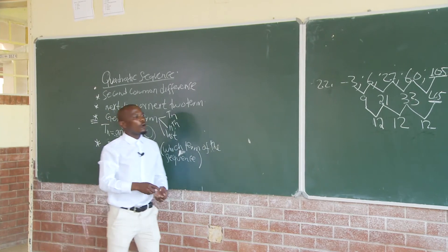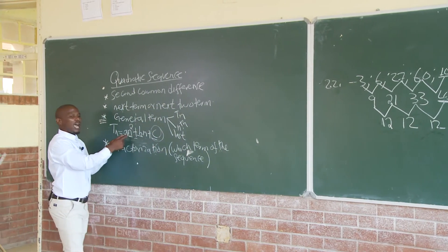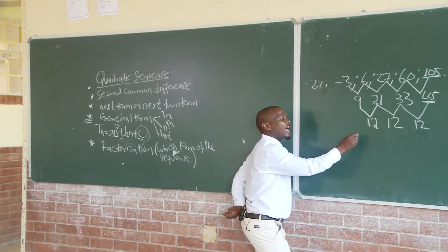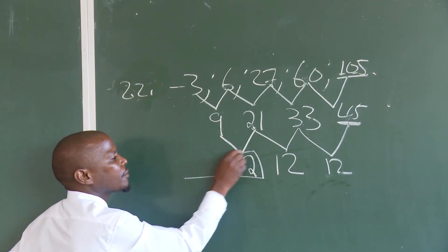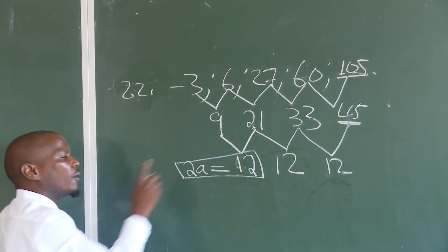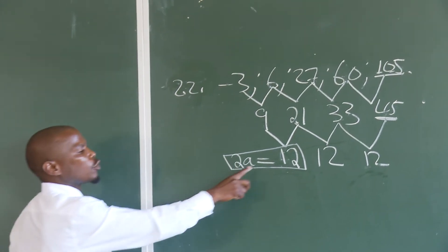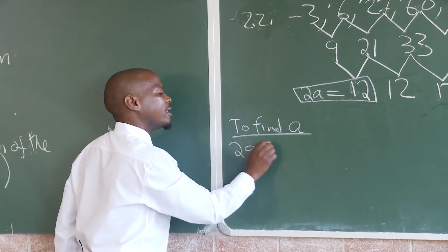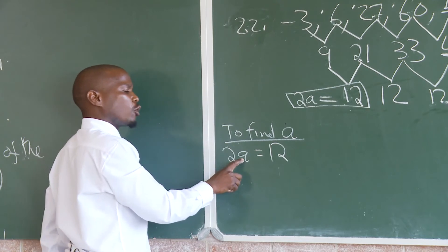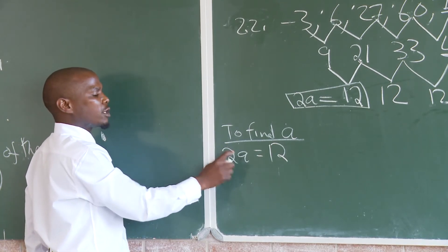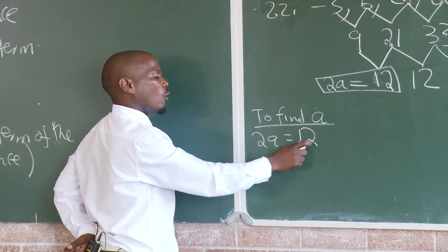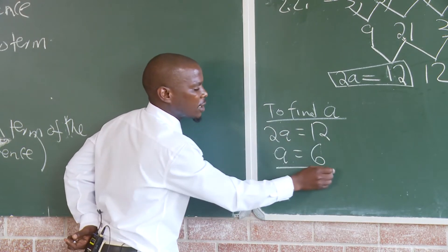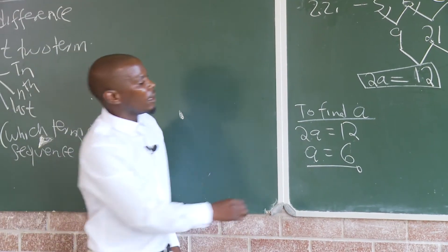Remember, as we said before, 'a' in this case is related to the second common difference. The formula is: 2a is equal to the second common difference. To find a: 2a equals 12, so we have two times 6, meaning a is equal to 6, because 2 times 6 is equal to 12. Then divide both sides by 2.